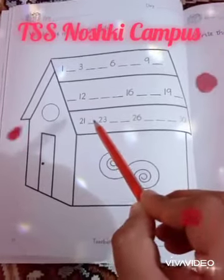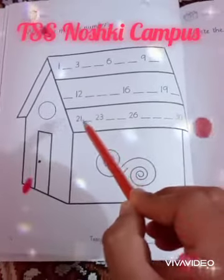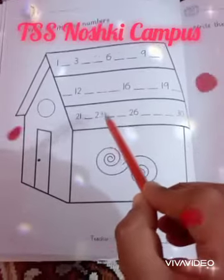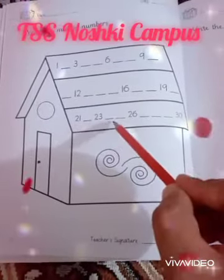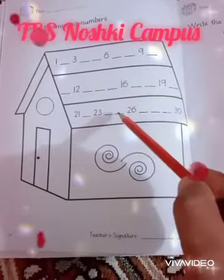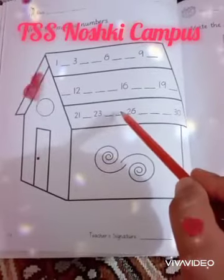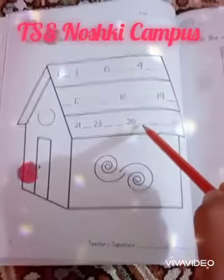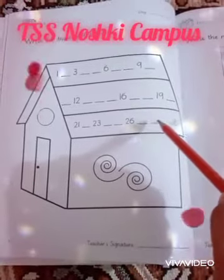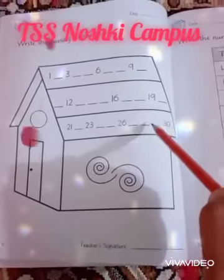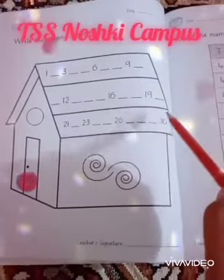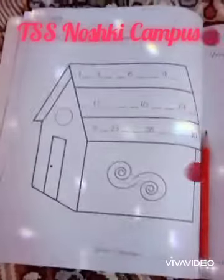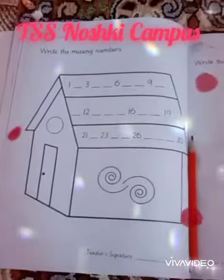Twenty-one. After 21, which number will come? Twenty-two. After 22, twenty-three. After 23, twenty-four. After 24, twenty-five. After 25, twenty-six. After 26, twenty-seven. After 27, twenty-eight. After 28, twenty-nine. After twenty-nine, the missing number will come: thirty. Okay, I hope you all got it. Thank you, stay safe, Allah Hafiz.